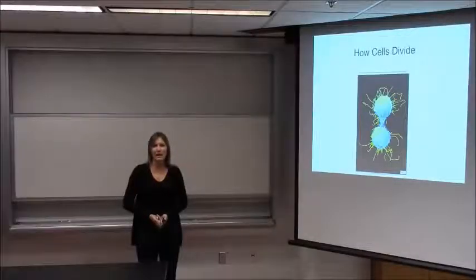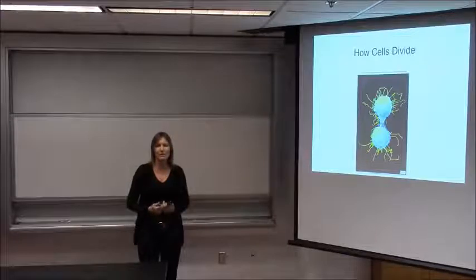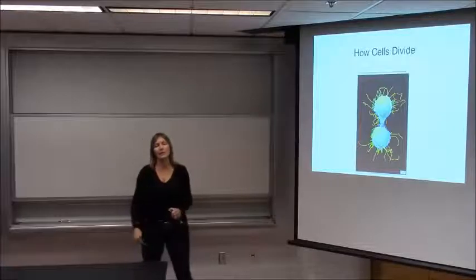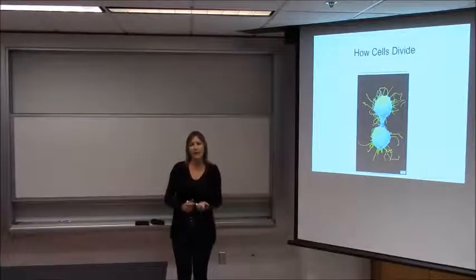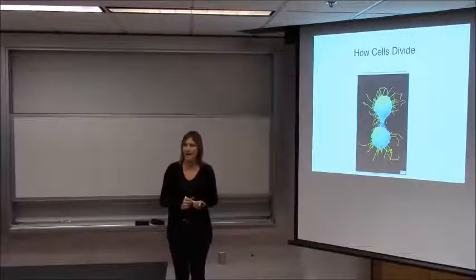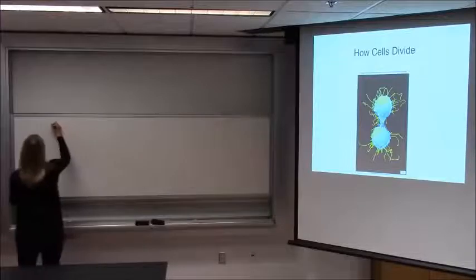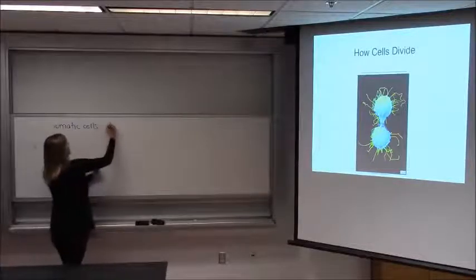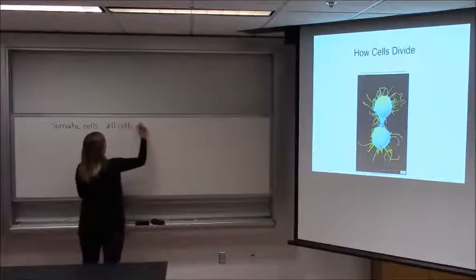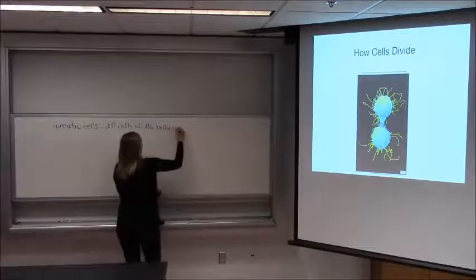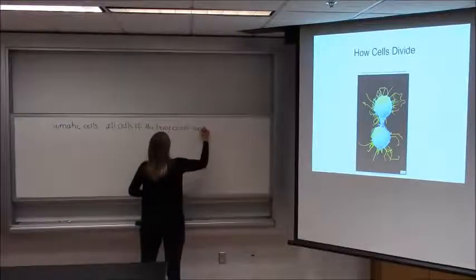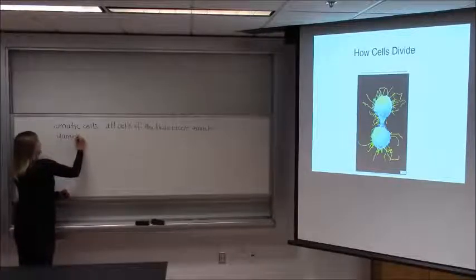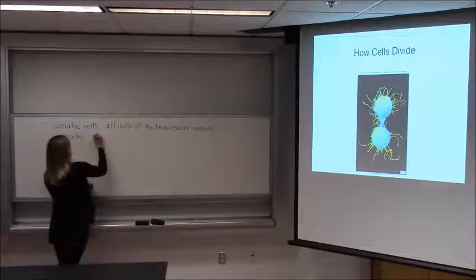In the next few lectures we are going to talk about how cells divide to make new cells in the body. We're going to start by talking specifically about all the cells of the body except for eggs and sperm, and then we're going to talk about how those same cells are used as precursors to make eggs and sperm. The cells of the body are called somatic cells — soma means body. These are all cells of the body except eggs and sperm, which are what we call the gametes.